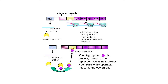The trp operon is a repressible operon, meaning the structural genes are usually in the on position. Here is the regulatory gene — it's being transcribed and translated all the time to produce a repressor protein. This setup is because usually tryptophan is not present in the environment of the bacteria. They need tryptophan to produce protein, but it's not available in the environment, so they have to produce their own.